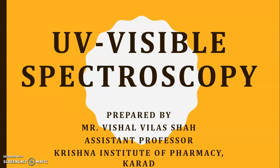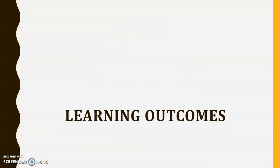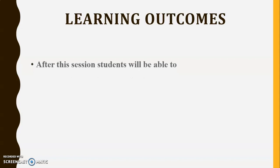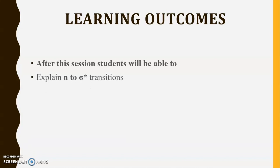In the previous session we have seen the different types of electronic transitions occurring in UV visible spectroscopy — four different electronic transitions in total. We studied two of those in detail. In this video we are going to discuss the remaining two electronic transitions in detail. After this session, students will be able to explain the n to sigma star type of transition and the pi to pi star type of transition.